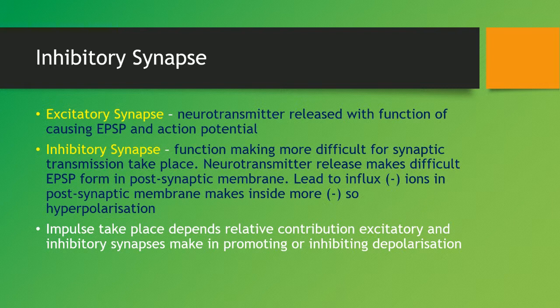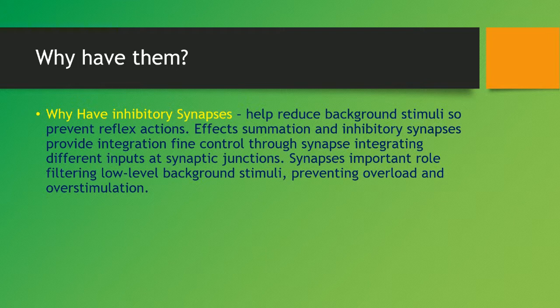Whether an impulse takes place depends on the relative contribution of the excitatory and inhibitory synapses — whether they are promoting or inhibiting depolarization. The purpose of inhibitory synapses is important: they help reduce background stimuli and prevent unwanted reflex reactions. The effective stimulation of inhibitory synapses provides fine control through integration at synaptic junctions, integrating different inputs. Synapses also play an important role in filtering low-level background stimuli, which prevents overload and overstimulation.